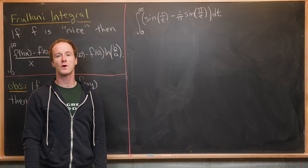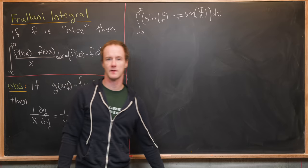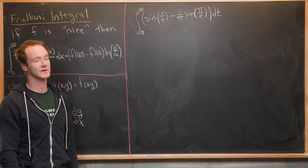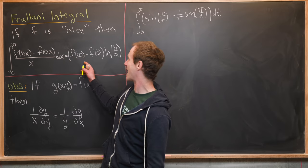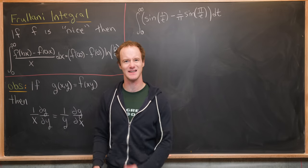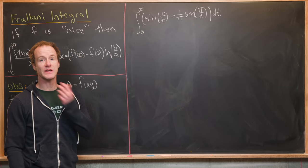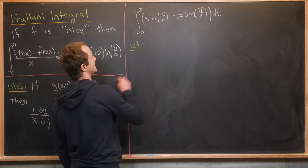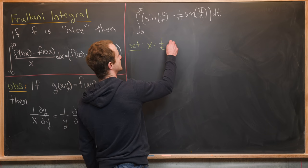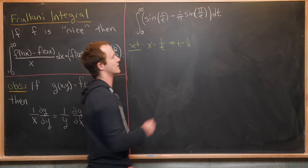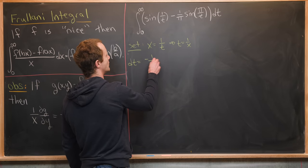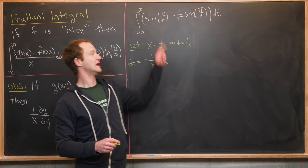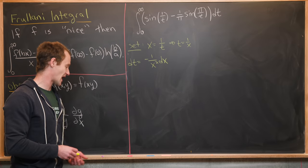We'll finish by using our new formula to evaluate an integral from an integration bee from Carnegie Mellon University. Looking at it, we notice we don't quite have the right form — we don't have x in the denominator of the whole thing. So we do a change of variables: set x equal to 1/t, equivalently t = 1/x. Then dt equals minus 1/x² dx, which allows us to change everything in the integral from x's to t's.